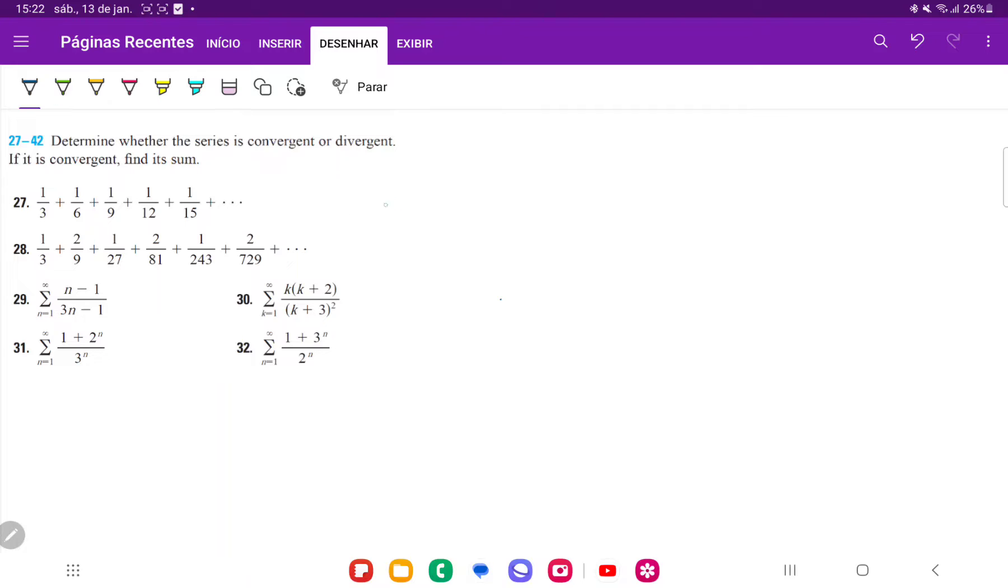So the pattern here is that we're going to have 1 over 3n, where n begins at 1, right? Because the first one is 1 over 3 times 1, and then plus 1 over 3 times 2, and then plus 1 over 3 times 3, and so on. So this is the sum where our index begins at 1 to infinity of 1 over 3n.